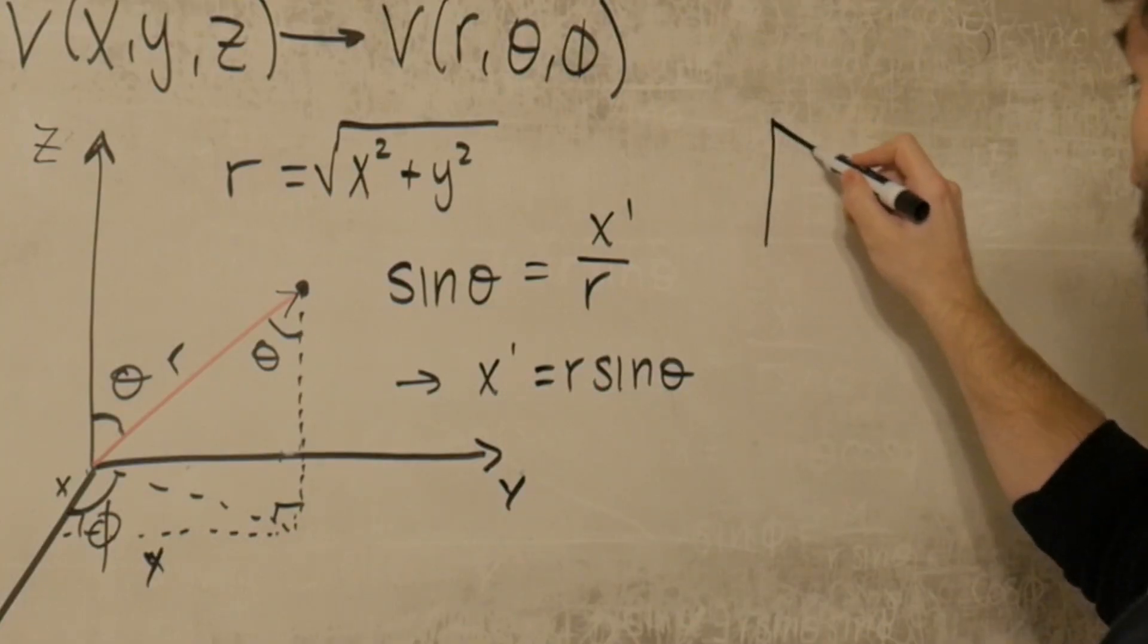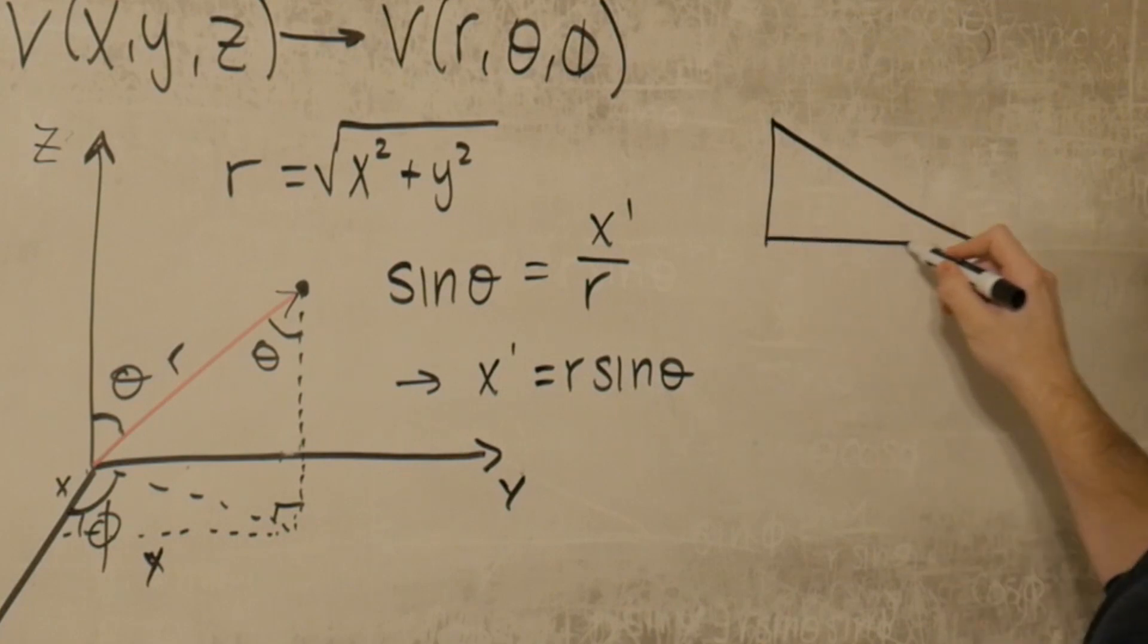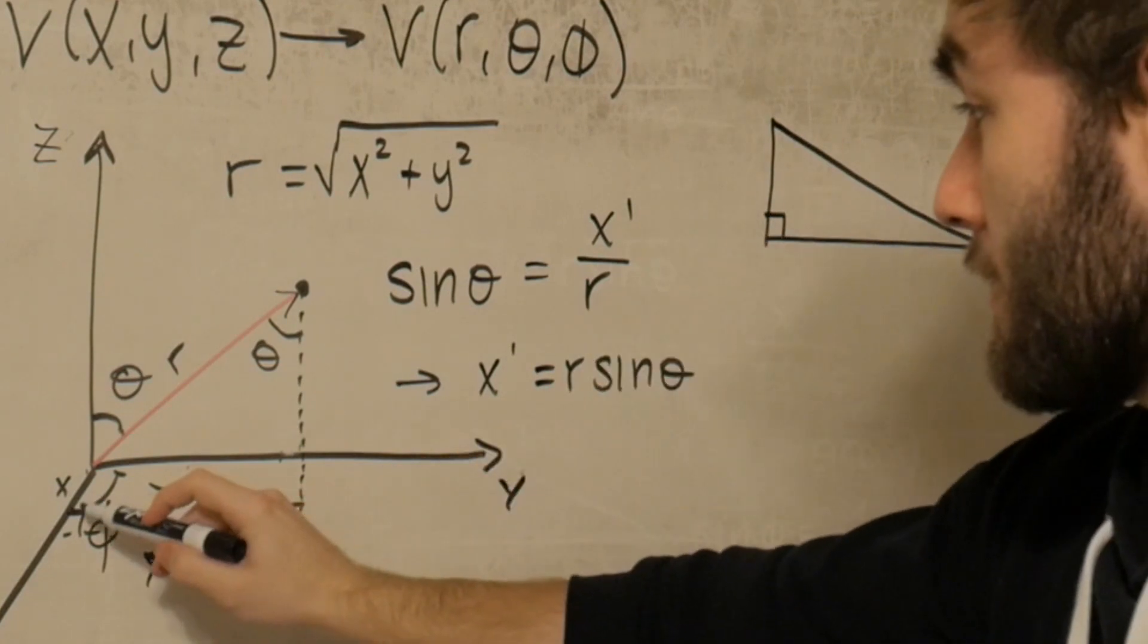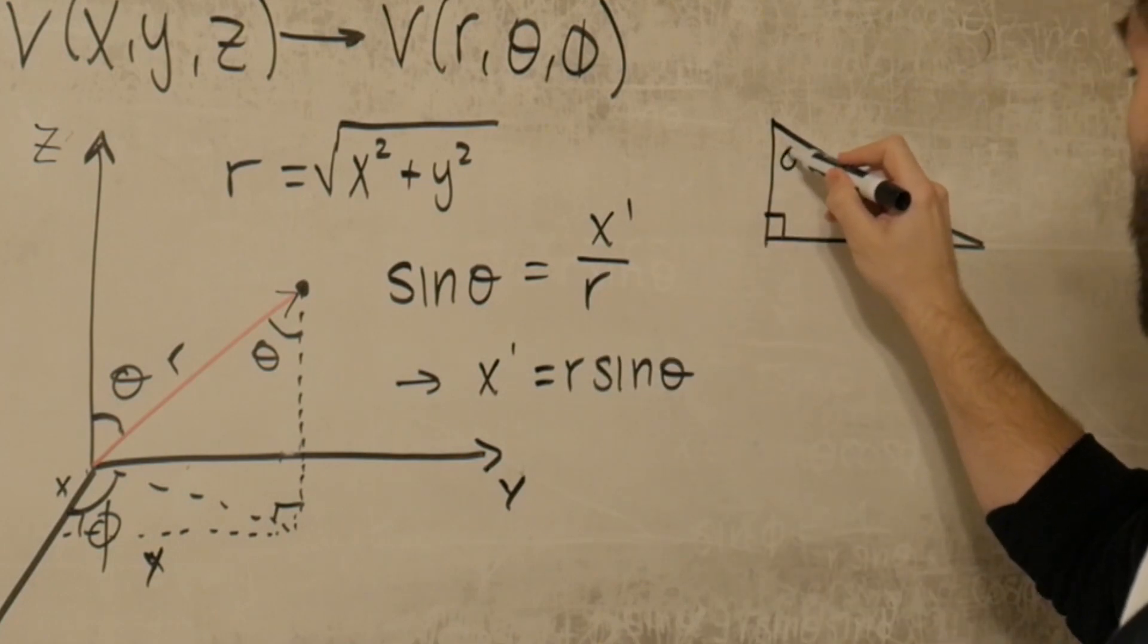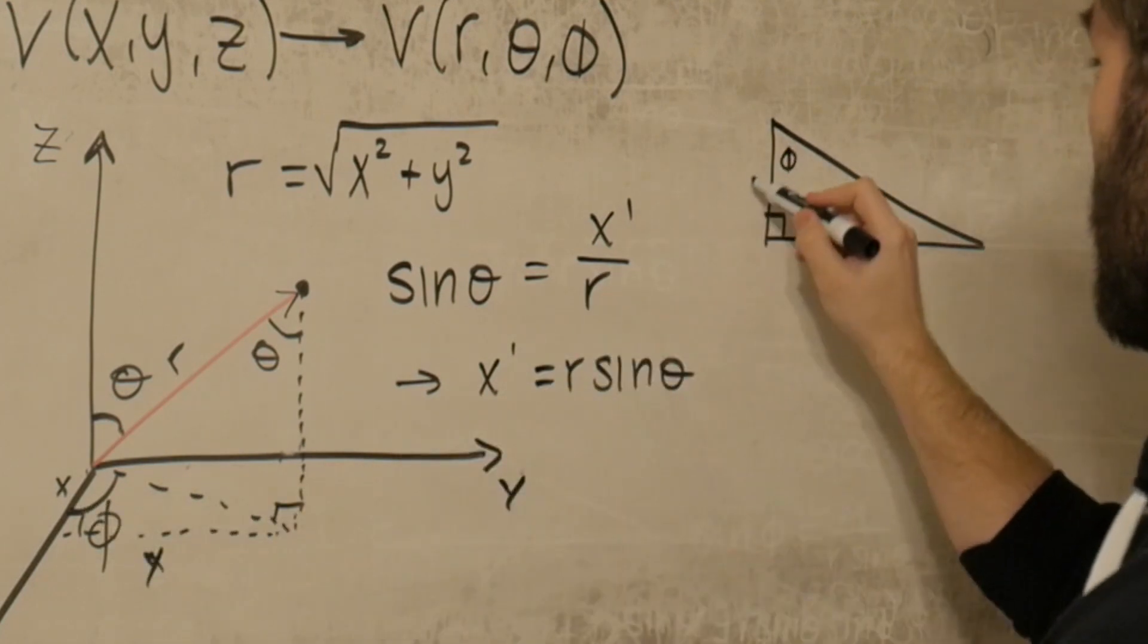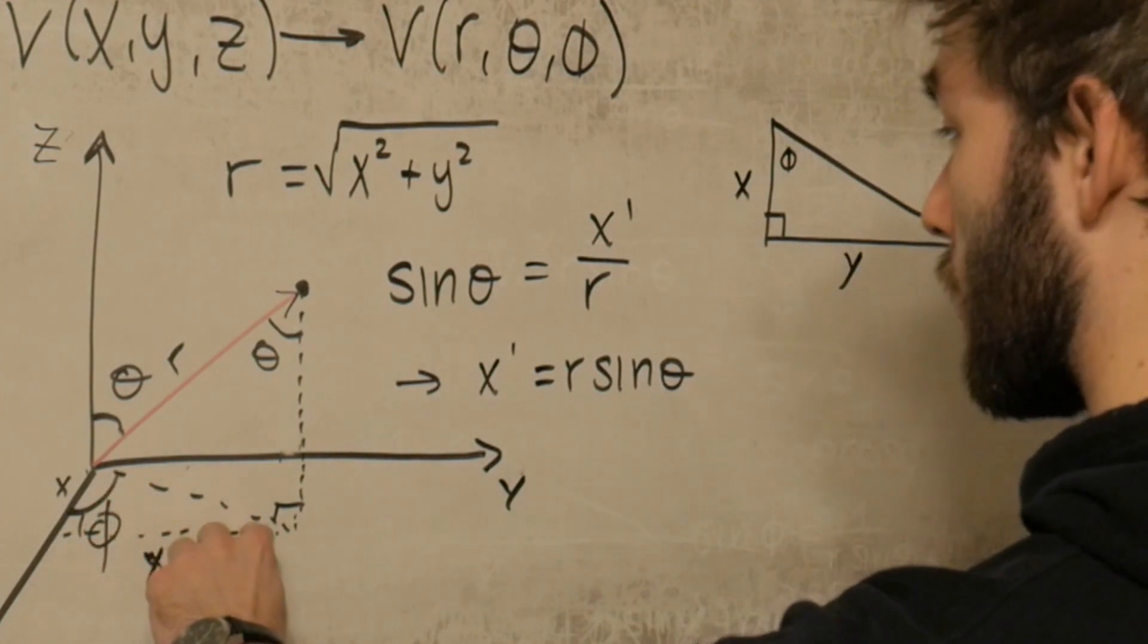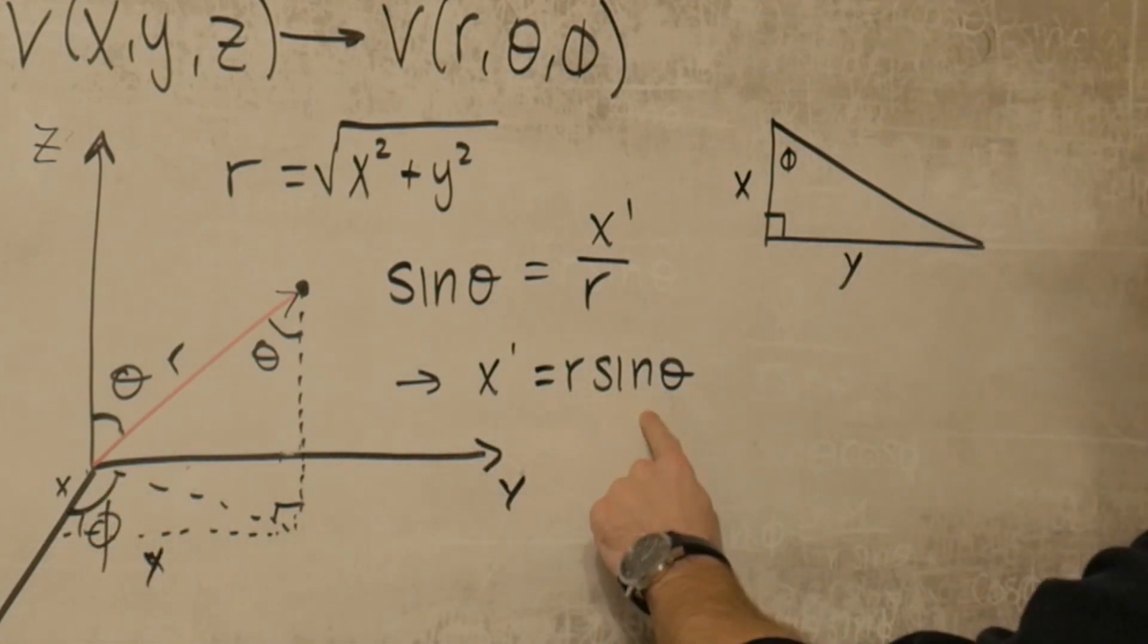We see that we have this going on. Okay, so here we have a right angle. This is just phi. We have x here, and we have y here, and we just found out what this piece of the triangle was. It was r sine theta.